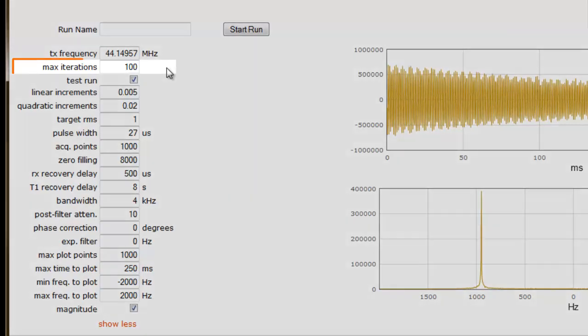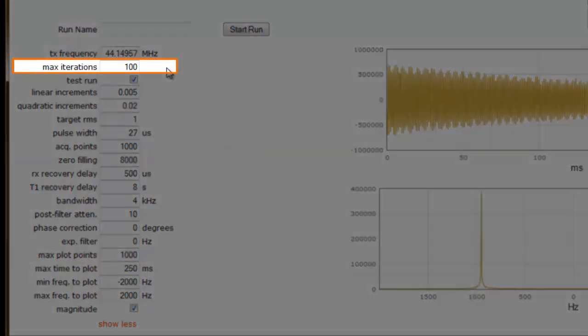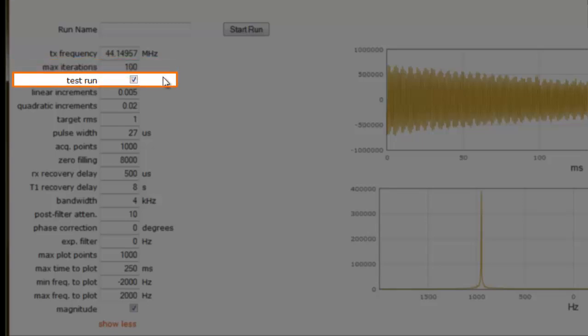We control the number of evaluations of the simplex algorithm by adjusting the value of the max iterations parameter. The test run box allows us to override the execution of the optimization loop of the AutoShim script. Checking the test run box turns off the programming loop, thus allowing us to execute a single RF pulse.